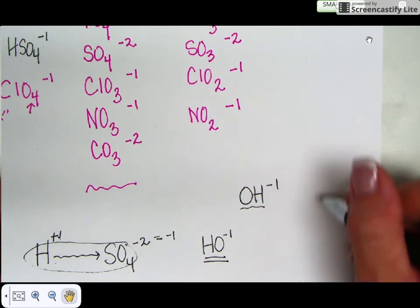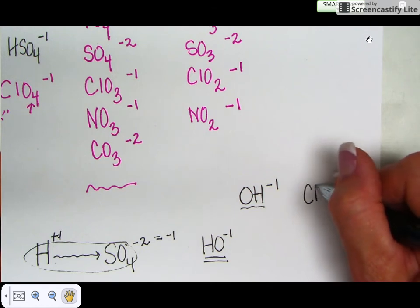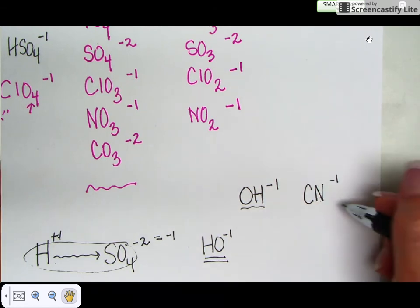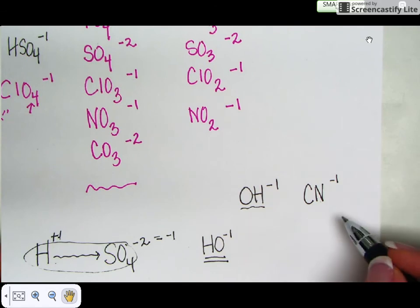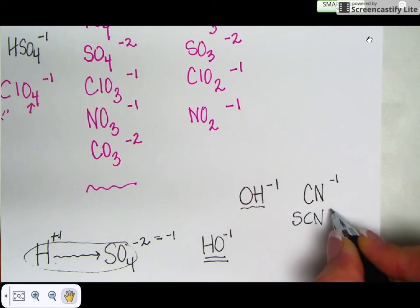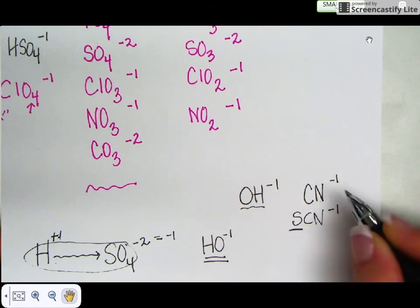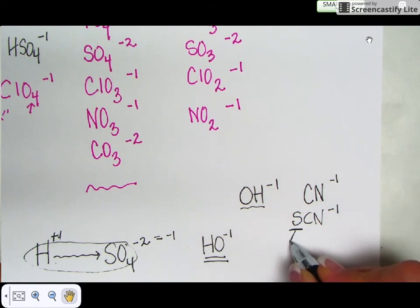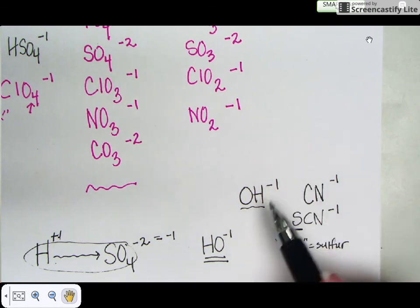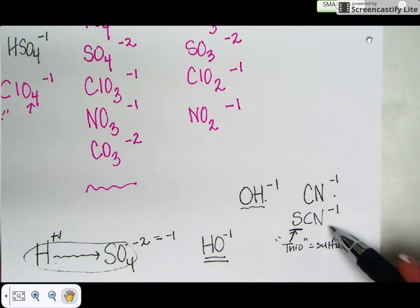And another one that's kind of difficult for students is cyanide. Cyanide is an -ide. It's CN with a negative one charge, carbon and nitrogen with a negative one. That's cyanide, a very poisonous substance. And then there's thiocyanate which is very similar. Thiocyanate and cyanide are very similar, SCN, same charge negative one. Notice you just added an S here. So this is cyanide, this is thiocyanate. Well the reason is thio, thio means sulfur is present. Notice there's a sulfur added to the cyanide. So this is hydroxide, this is cyanide, and this is thiocyanate.